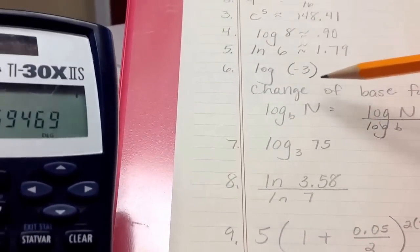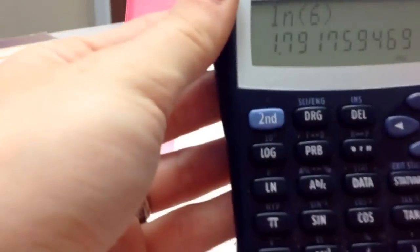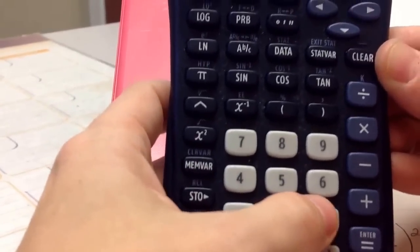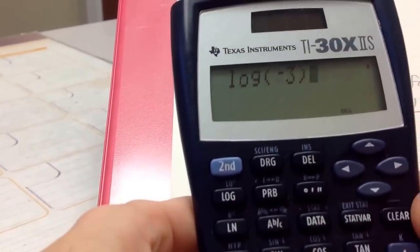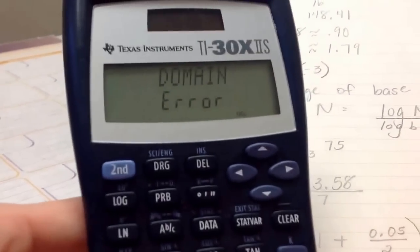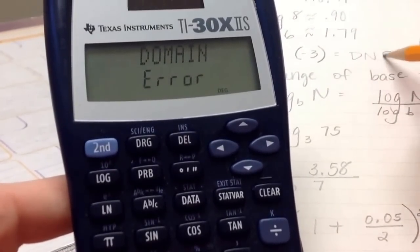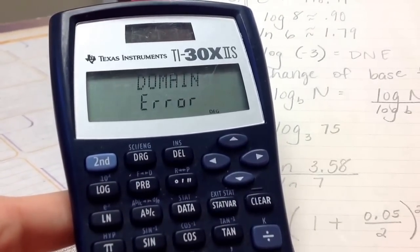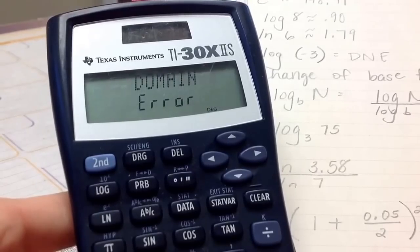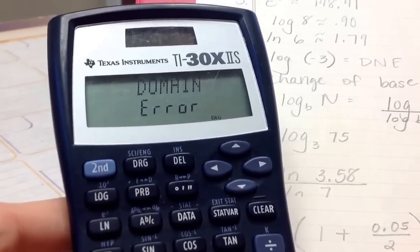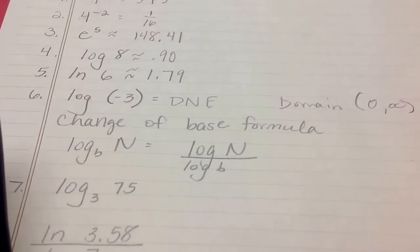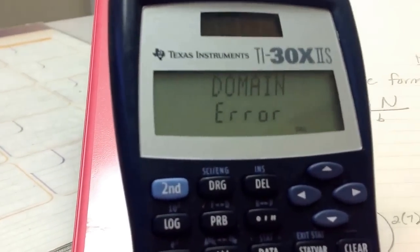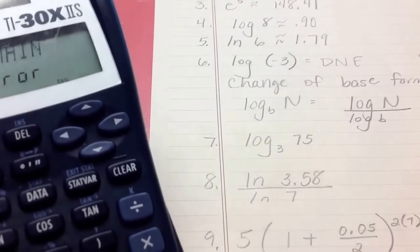Continuing on the page, let's try log of negative 3 and see what happens. When I press log, then the negative button — remember that's at the bottom — then negative 3, close the parenthesis, and press enter, I get a domain error. That's because this does not exist. The domain of a logarithm is the positive reals, from 0 to positive infinity. Any time you include a negative value inside the argument of the logarithm, you'll get this domain error message, meaning it does not exist.